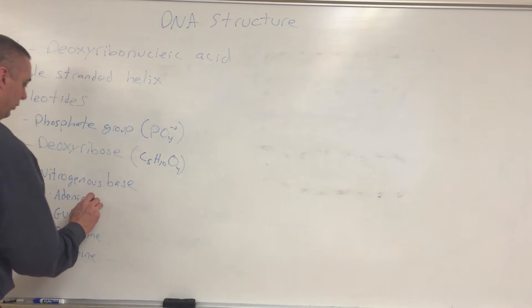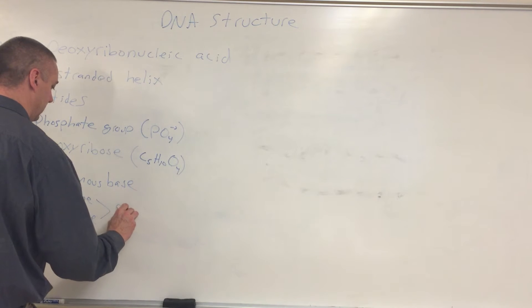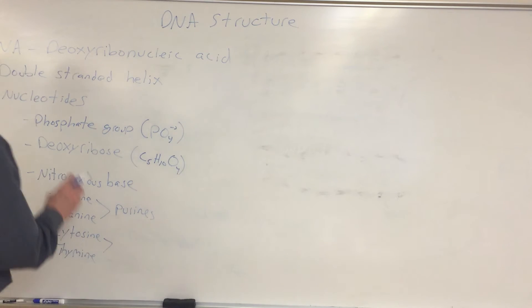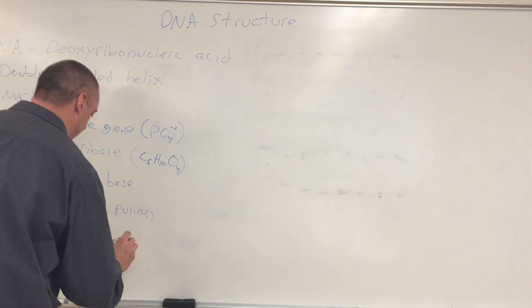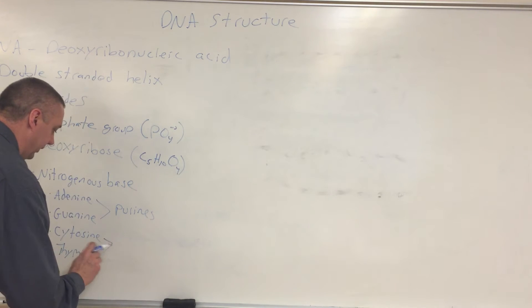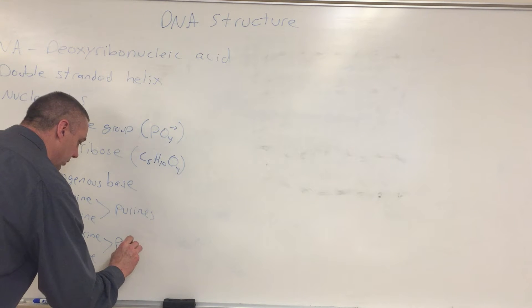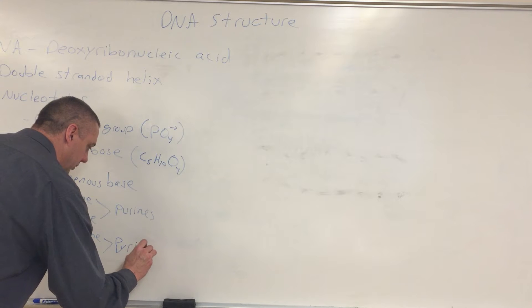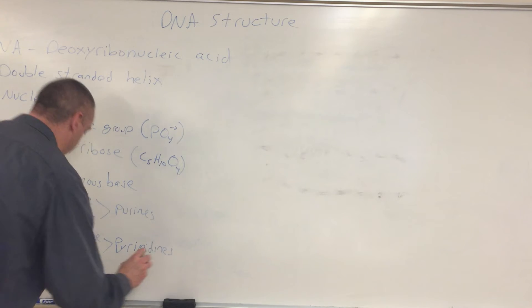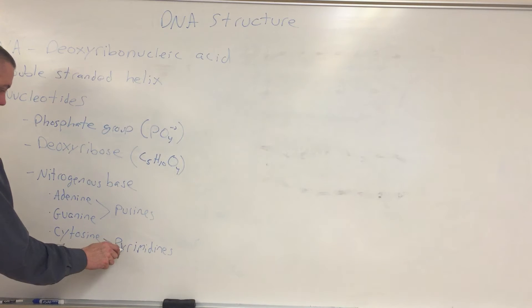Adenine and guanine are purines as the nucleotide. Adenine and guanine make up the purine nucleotides. Cytosine and thiamine make up the pyrimidines. Do you have trouble remembering that? Pyrimidines have a Y in them. Cytosine and thiamine have Ys in them. So does the word pyrimidines.